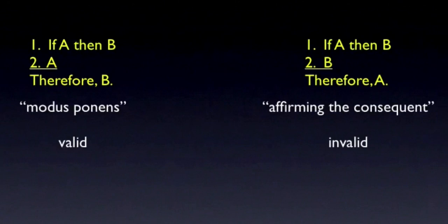Remember, what it means to say that an argument is invalid is that if the premises are all true, the conclusion could still be false. In other words, the truth of the premises does not guarantee the truth of the conclusion.